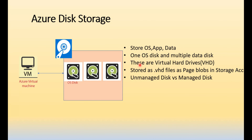Each disk is called a virtual hard drive because they are hosted in the cloud — they act like hard drives but are in Azure. They are stored in the format of .vhd (virtual hard drive) files as blob storage in a storage account. As mentioned in previous videos when discussing page blobs, these VHD files are stored as page blobs in a storage account.